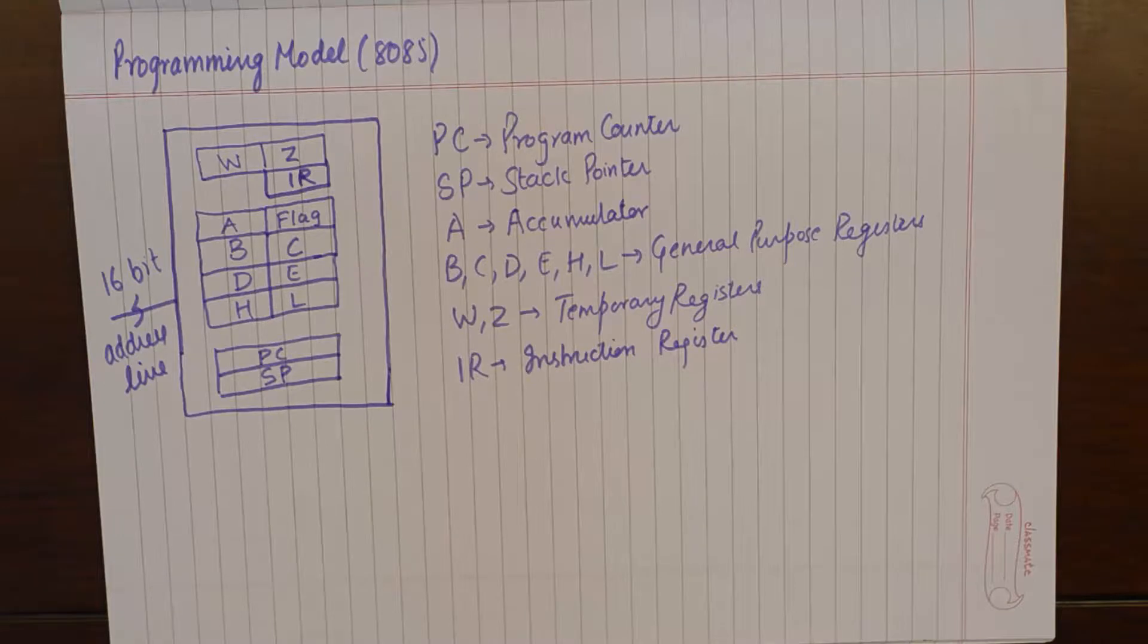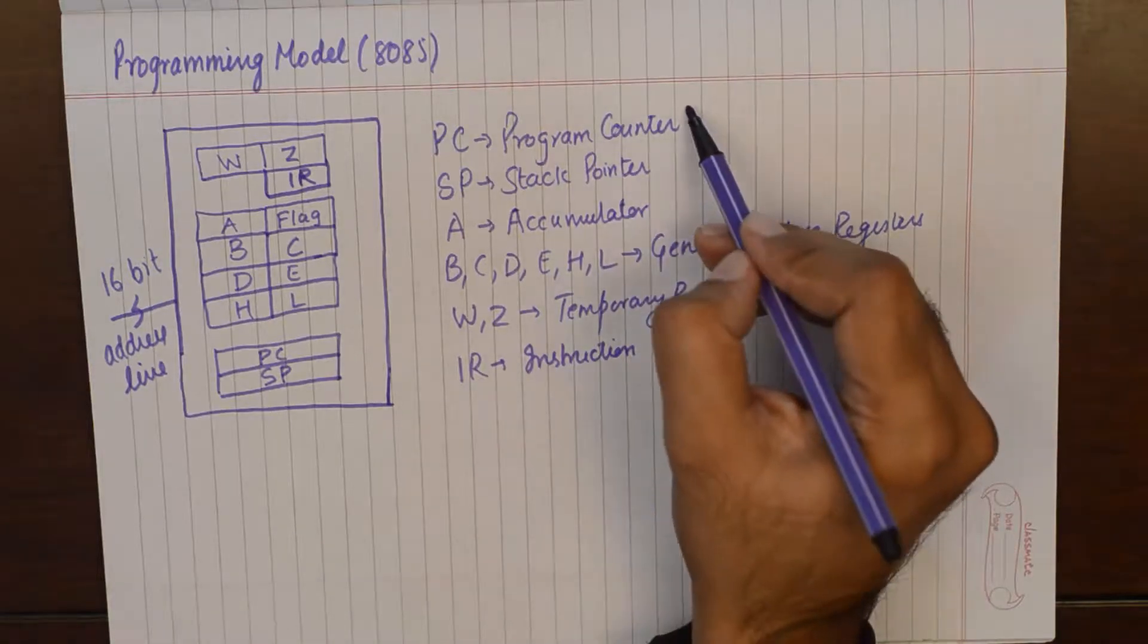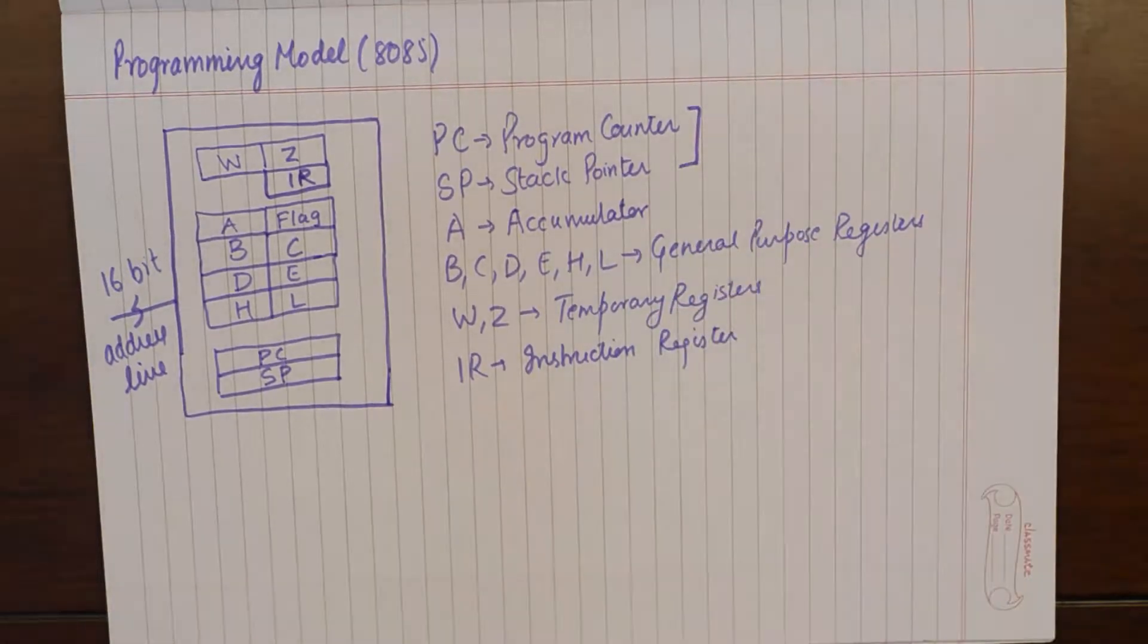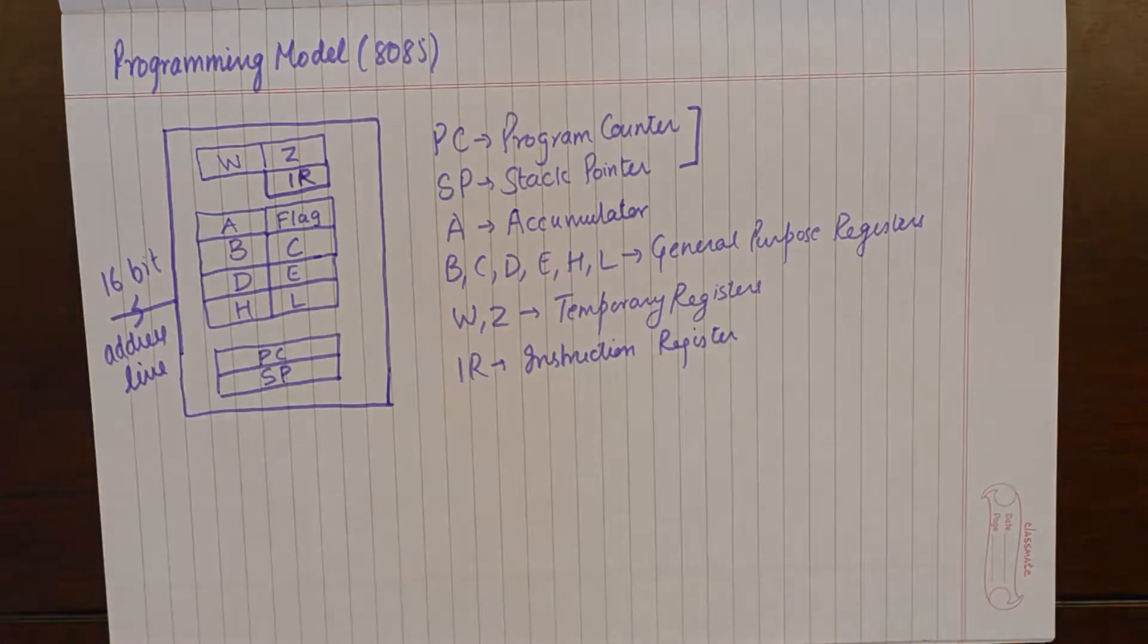Now out of all these registers, Program Counter and Stack Pointer, they point to a memory location in the memory. Program Counter points to a specific memory location from where the program is starting, the current location of the program.